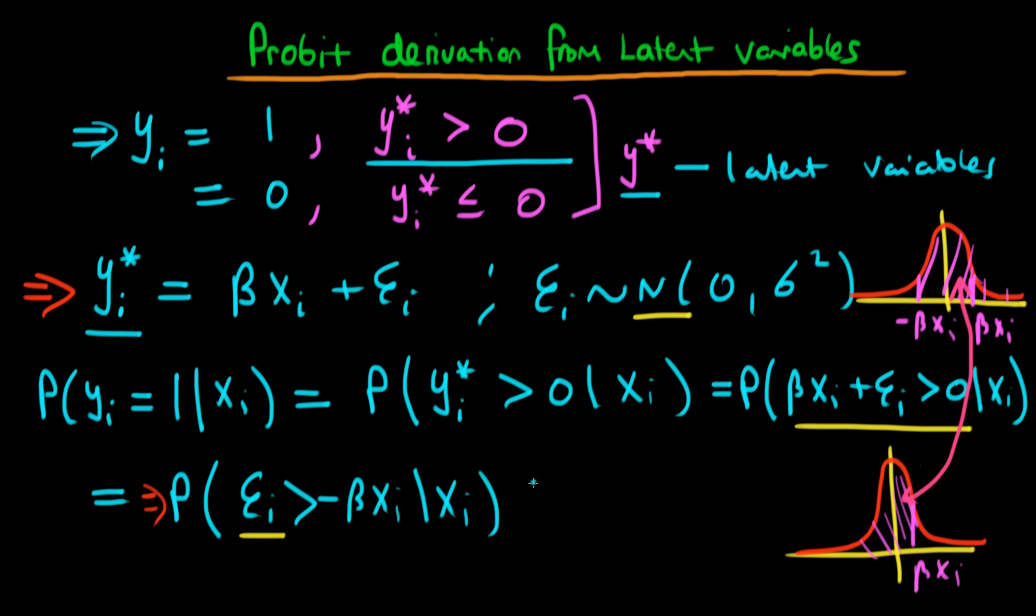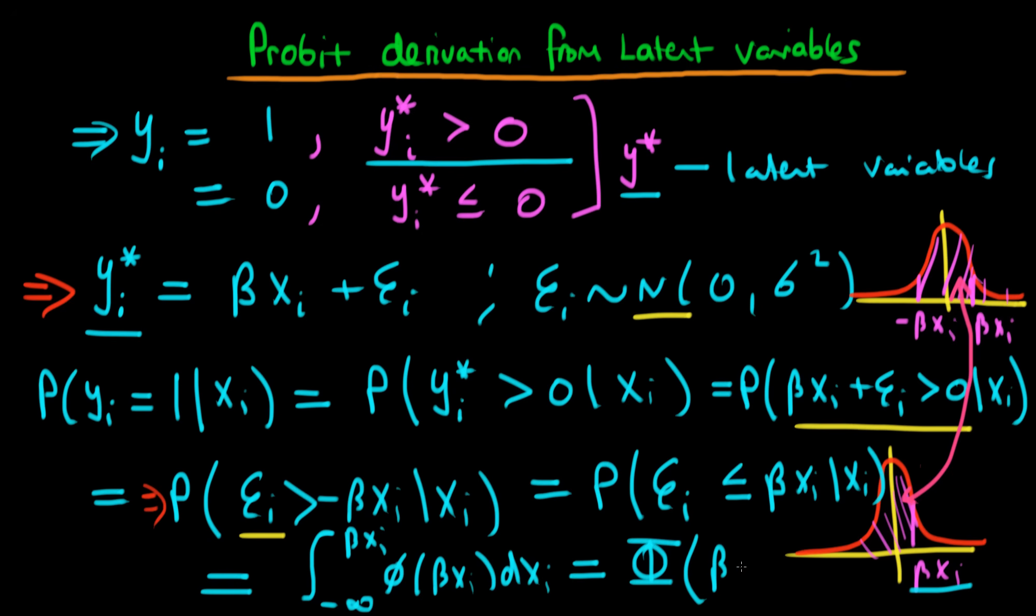So because of that, that means that we can rewrite the probability again as the probability that epsilon i is less than or equal to beta xi, given that we have xi. So that's just the area to the left of beta xi on our normal PDF. And furthermore, this is just defined in terms of an integral. It's the integral from minus infinity up to beta xi of the normal PDF, which we're going to write as small phi of beta xi dxi. And the integral of the normal PDF we just define in terms of the normal CDF of beta xi.